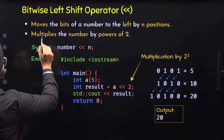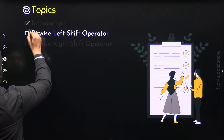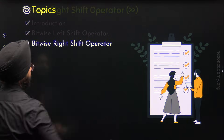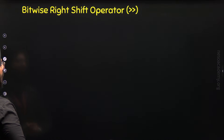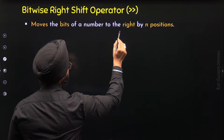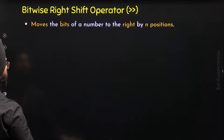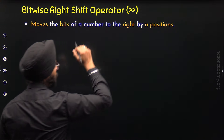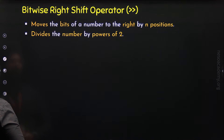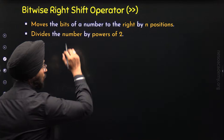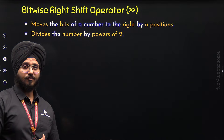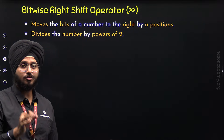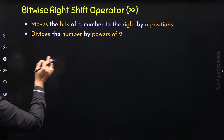We have now understood the bitwise left shift operator. Let's move to the bitwise right shift operator. It allows us to move the bits of a number to the right by n positions, shifting all bits of a binary number towards the right. As a result, it divides the number by powers of 2, which is different from the left shift operator that multiplies by powers of 2.